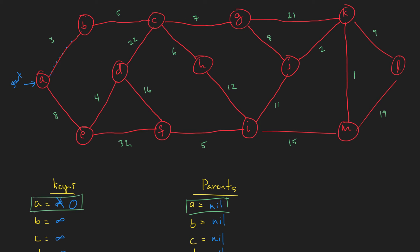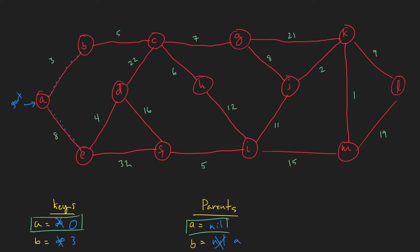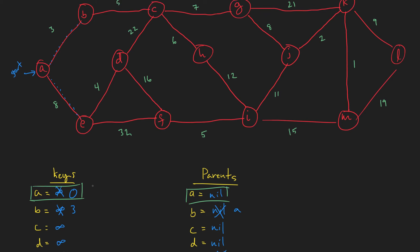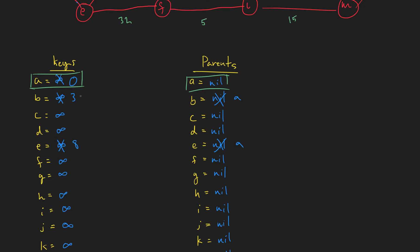Now that we've added A to the tree, we're going to check its adjacency list and update these keys. A has B and E. A to B is 3, so we change B's key to 3 and its parent to A. E has a key of 8 now and its parent is also A. The smallest number in our keys is 3 — all others are infinity except E which is 8 — so 3 is our smallest.